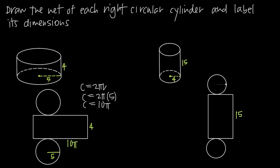We want to go ahead and label the radius of both circles — in a perfect world they're identical — so we label the radius as 4. Then we label the width of this rectangle. Remember, it's the circumference again, so circumference equals 2πr. We know the radius is 4, so we get 2π × 4, which means the circumference equals 8π. We label the width of the rectangle as 8π. Now we've got the dimensions of this net for the right circular cylinder. That's how you draw a net and label the dimensions of a right circular cylinder.